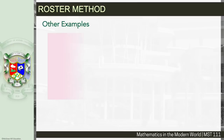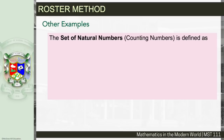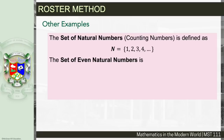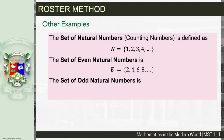Here are other examples. The set of natural numbers or counting numbers is defined as capital N = {1, 2, 3, 4, …}. The set of even natural numbers is represented by capital E = {2, 4, 6, 8, …}. The set of odd natural numbers is notated by capital O = {1, 3, 5, 7, …}. For our discussions, we will use N for natural numbers, E for even natural numbers, and O for odd natural numbers.